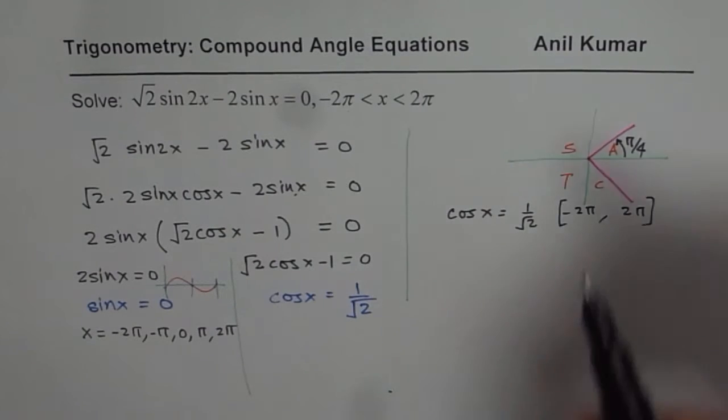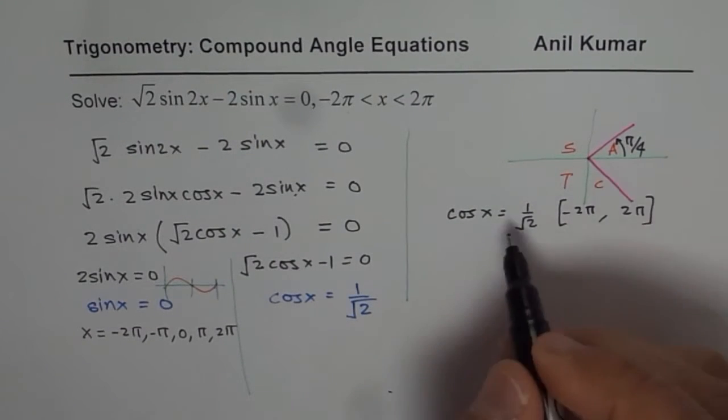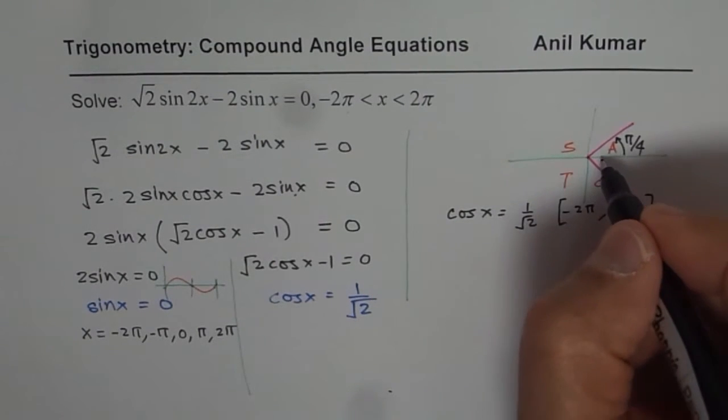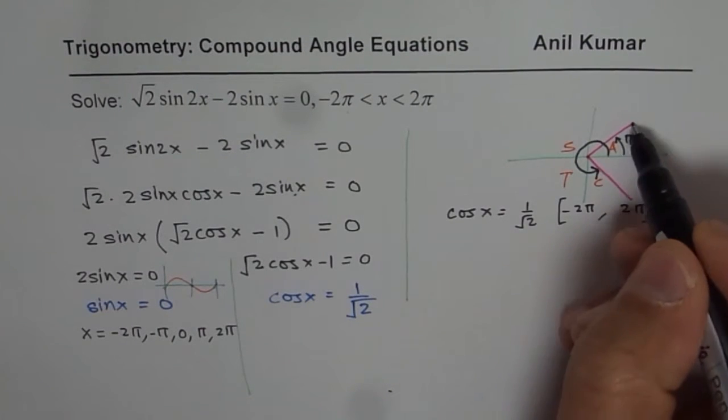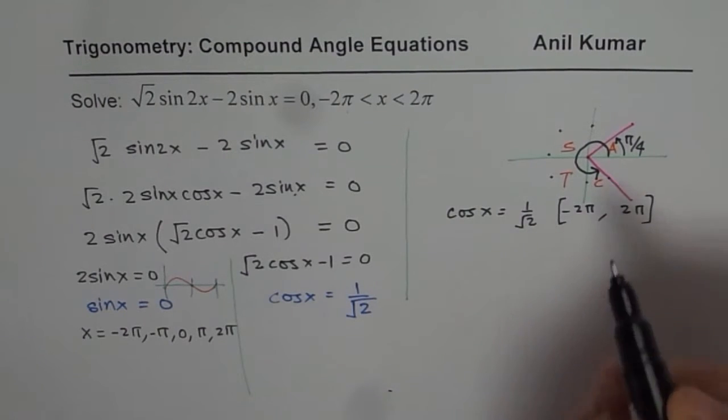So on the positive side, we have π/4 and then this much. So 1π/4, 2, 3, 4, 5, 6, 7. So x = π/4 or 7π/4, right?